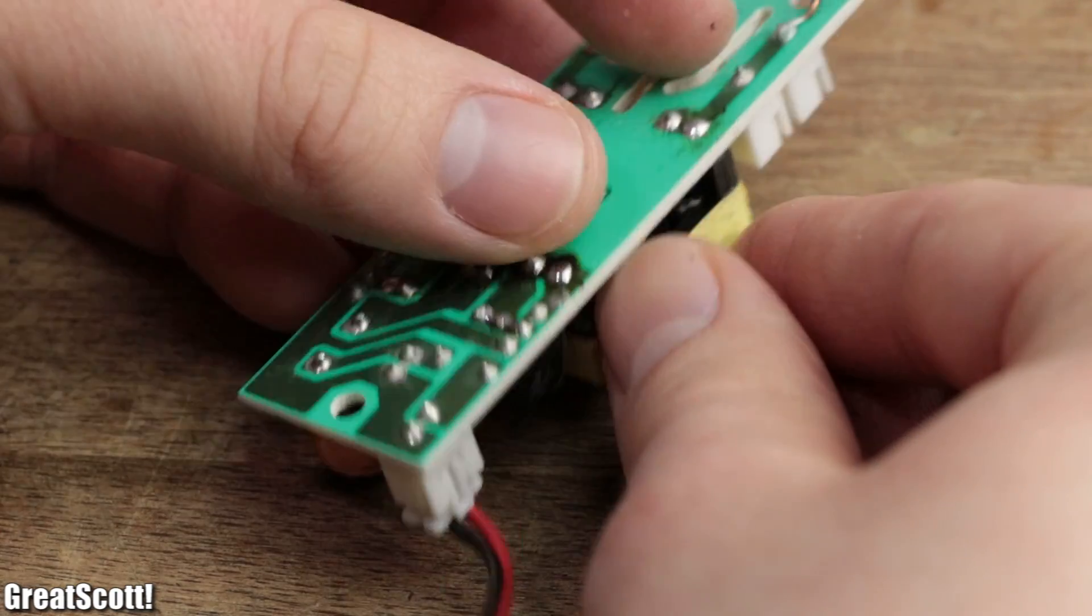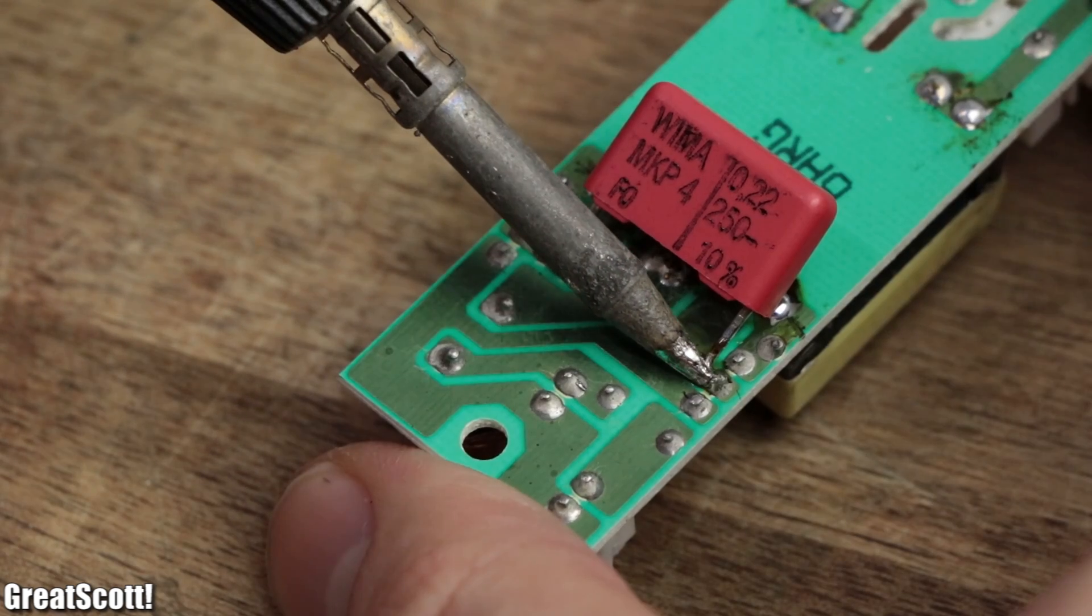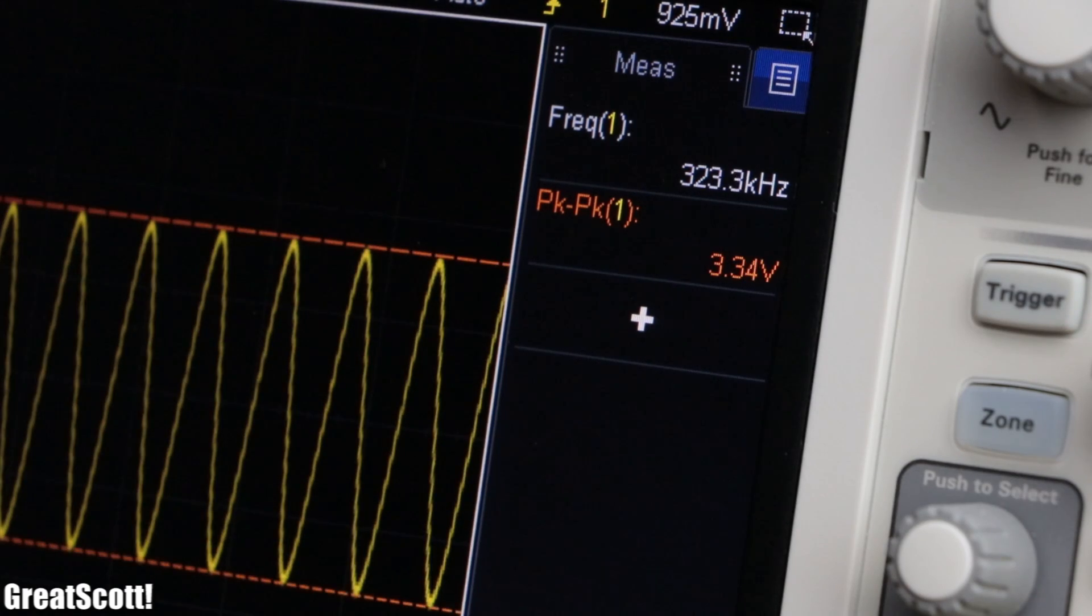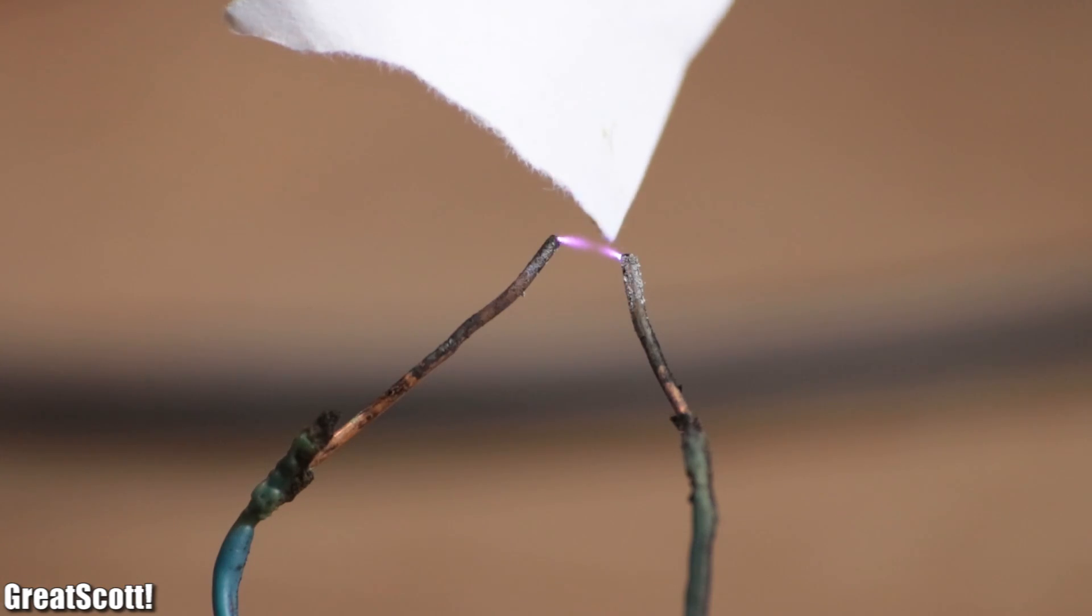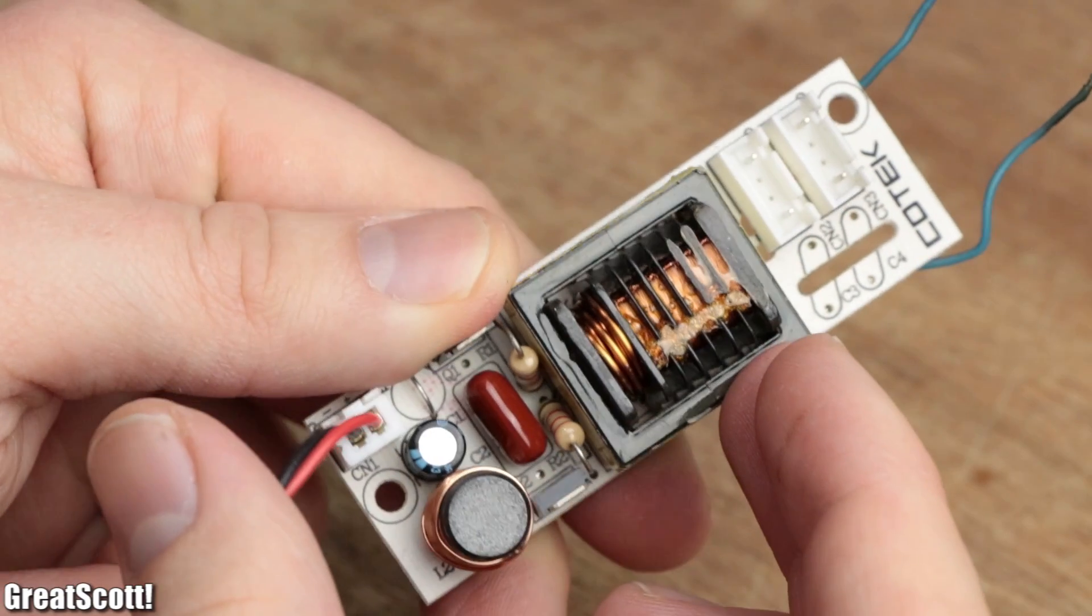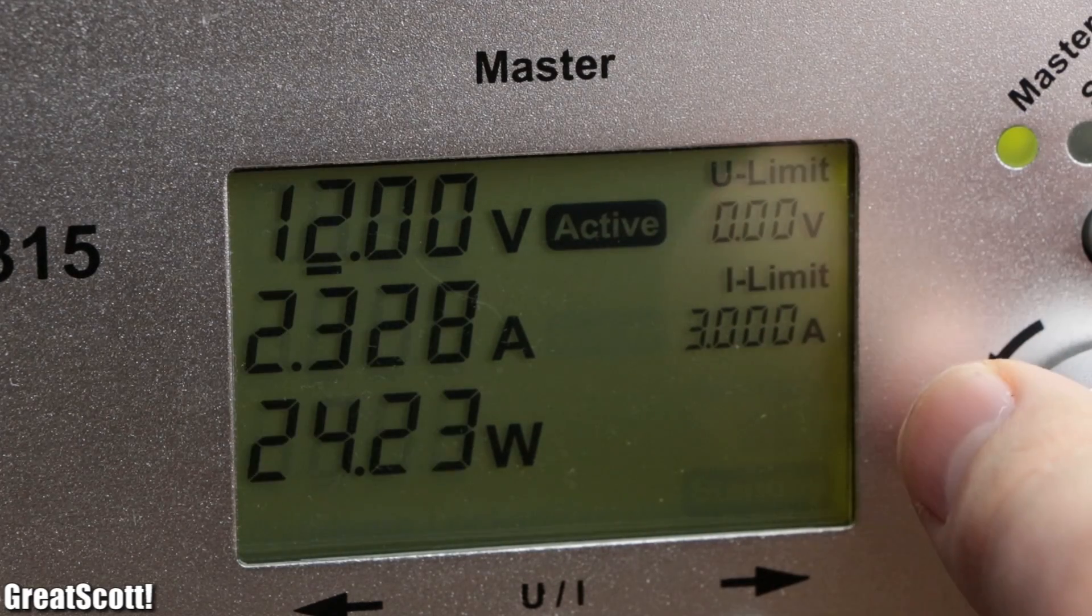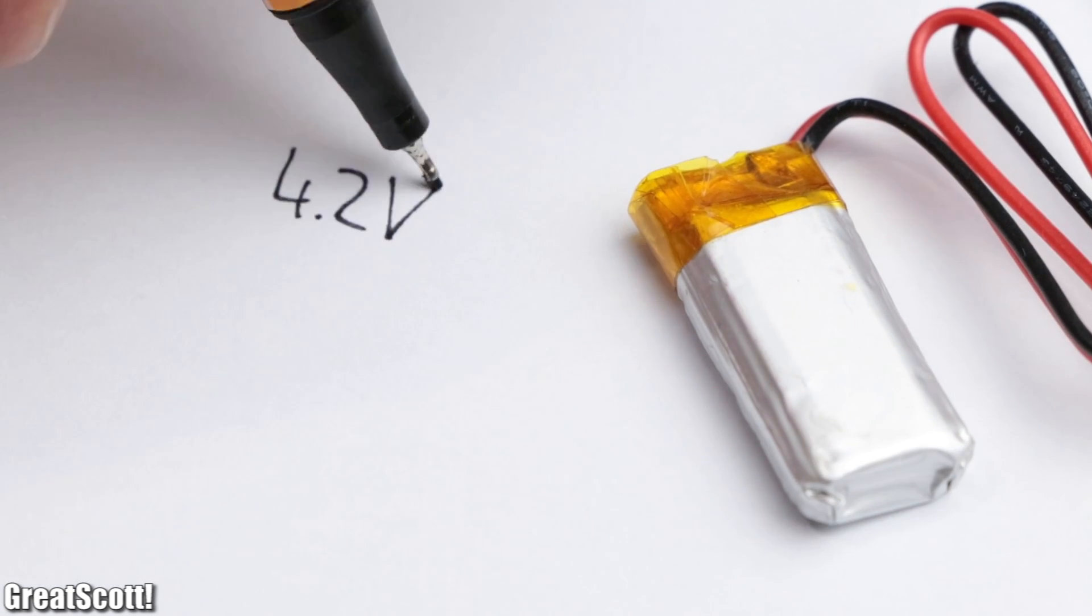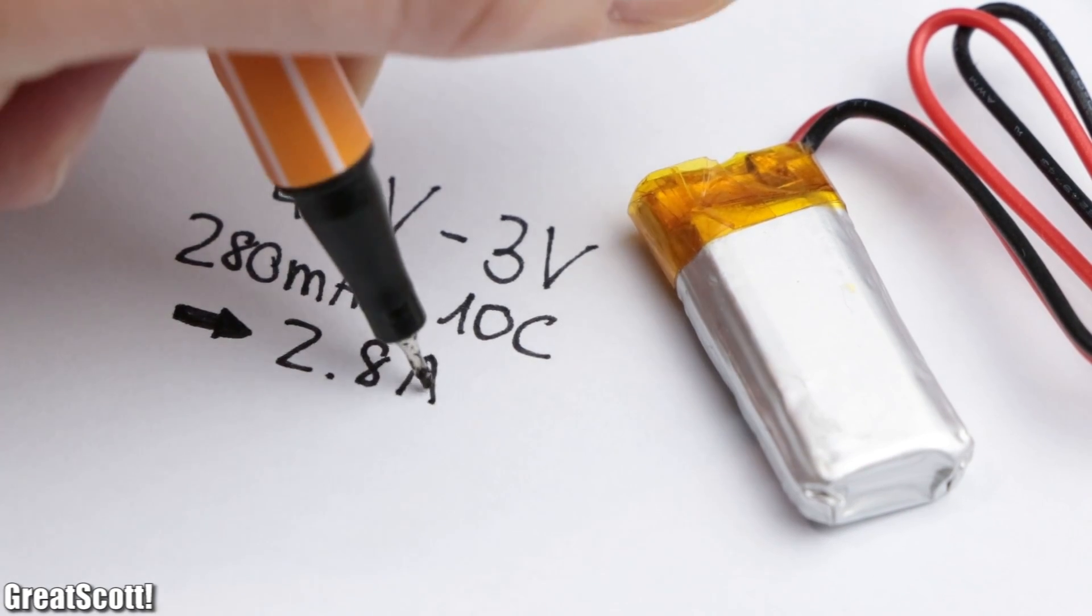But even after I optimized the circuit by adding a 220 nanofarad capacitor in parallel to the original one in order to lower the frequency of the sine wave from 320 kilohertz to 76 kilohertz, there still were some problems. For one, the circuit is not portable because of its bulkiness and most importantly its power requirements of up to 12 volts and 3 amps cannot be fulfilled by a LiPo battery with a voltage range of 4.2 volts to 3 volts and a current capability of 2.8 amps.